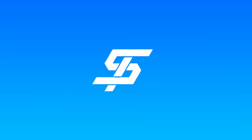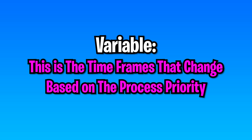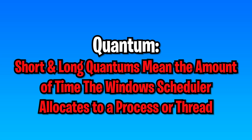There are a lot of different values, so let's break down some of the terms that are used. The term fixed means a constant time allocated to each process regardless of priority — every process will receive the same amount of CPU time before the scheduler switches to a different process. Variable refers to timeframes that change based on process priority.